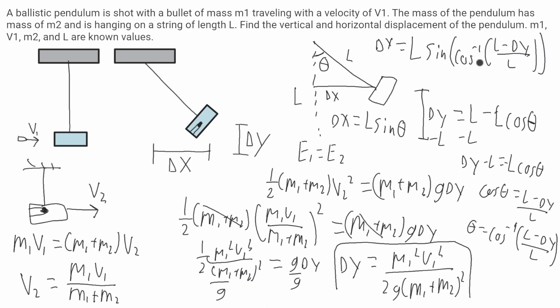Now this might look intimidating because you have a sine and then inside of it you have a cosine inverse thing. What you should do first is solve the inside here, which will require you finding a numerical value for delta y.